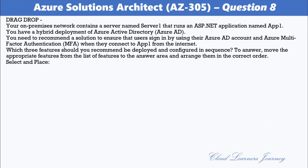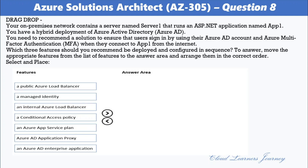Question number eight: Your on-premises network contains a server named Server1 that runs an ASP.NET application named App1. You have a hybrid deployment of Azure Active Directory. You need to recommend a solution to ensure that users sign in using their Azure AD account and Azure multi-factor authentication when they access App1 from the internet. Which three features should you deploy and configure in sequence? The features available include: a public Azure load balancer, a managed identity, an internal Azure load balancer, a conditional access policy, an Azure App Service plan, Azure AD Application Proxy, and an Azure AD Enterprise Application.